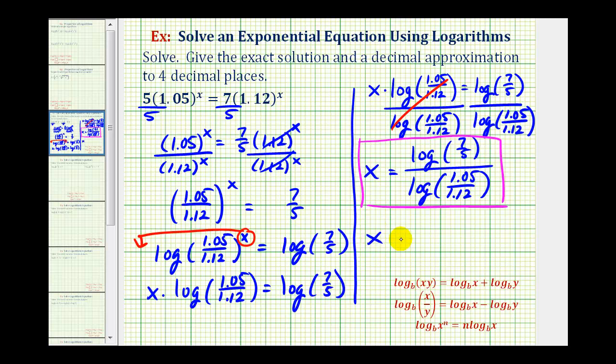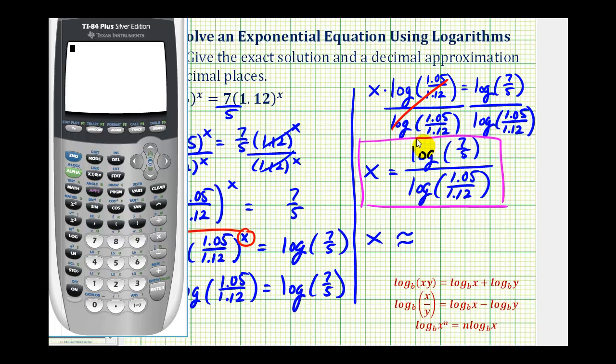And now to get a decimal approximation, we'll have to use the calculator. So we'll have a set of parentheses for the numerator and a set for the denominator. So we'll have an open parenthesis, common log seven divided by five, closed parenthesis for the logarithm, and closed parenthesis for the numerator,